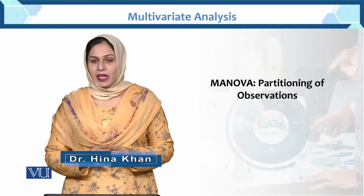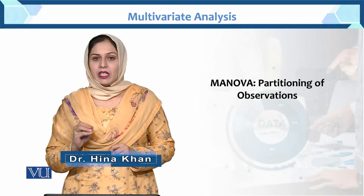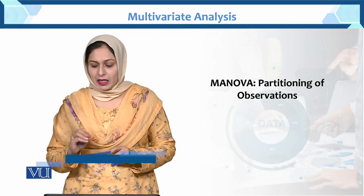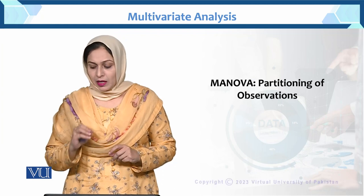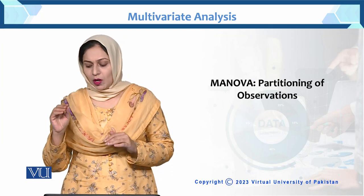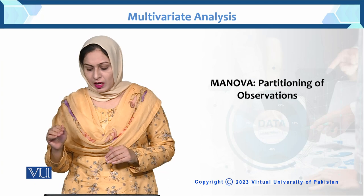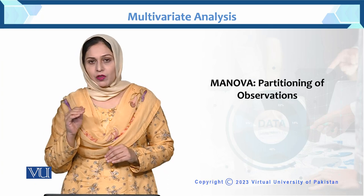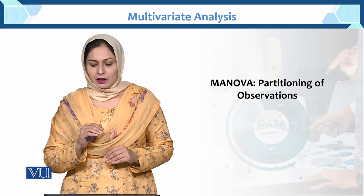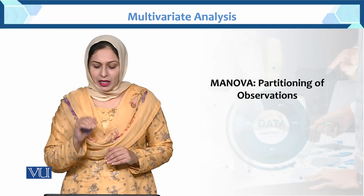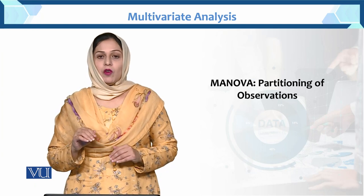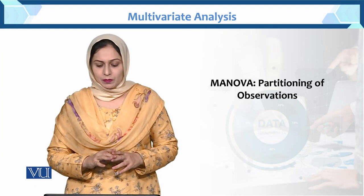In MANOVA, we need the sum of squares of deviation from mean. So we need to partition the observations in terms of deviation from mean. Here is an example of MANOVA partitioning of observation.